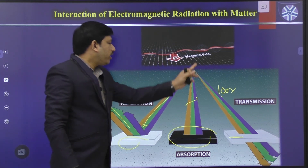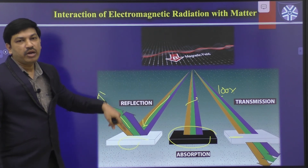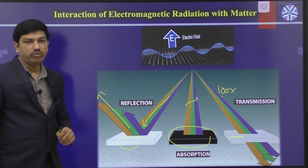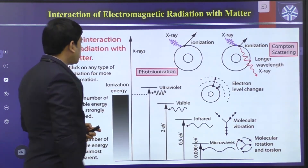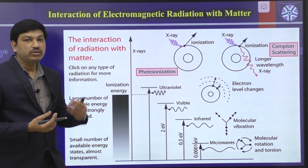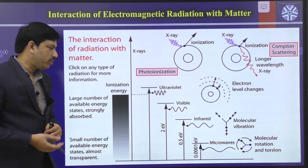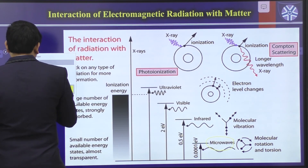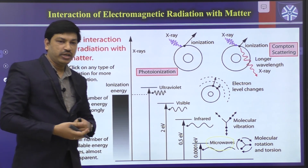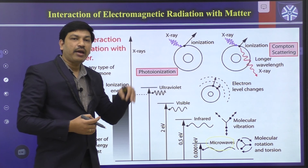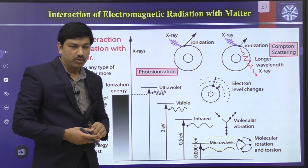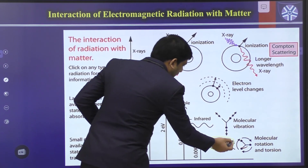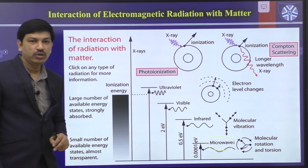So whenever electromagnetic radiation interacts with matter, there are three possible outcomes: transmission, absorption, or reflection. Now let us see what happens when we send different types of radiation toward an unknown compound, and what molecular changes are produced.